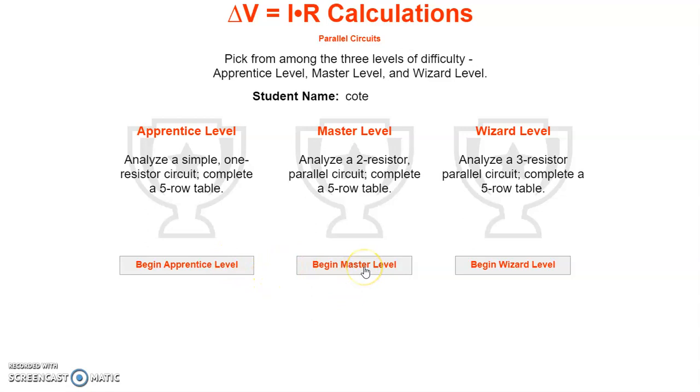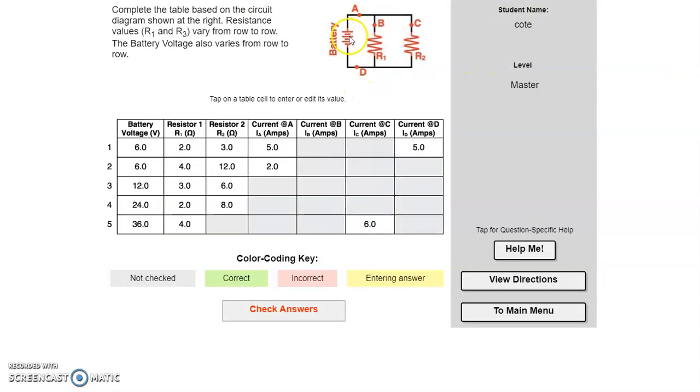I'm going to go to the master level because it has two resistors that are in parallel. The apprentice level is basically going to be the same as the first one on the series. So now you have a parallel circuit. Current comes out of the positive side of the battery, it hits this spot here and it's going to split. So some current will go here, some current will go there. That's what makes it a parallel circuit, because it has multiple paths for current to flow. But remember, in parallel the voltages across the resistances are the same. So if your battery voltage is 6 volts, your voltage across everything has to be 6 volts.